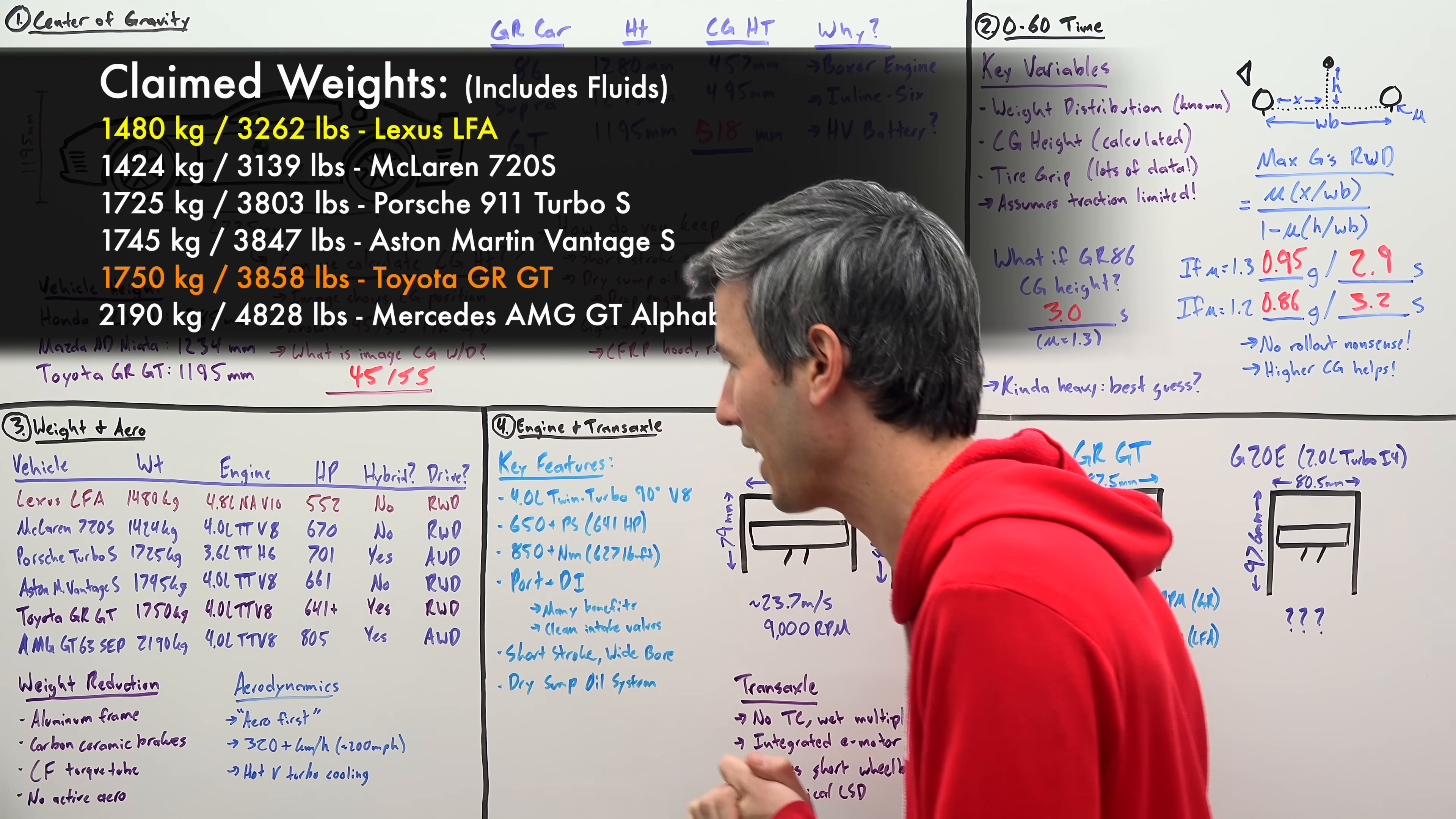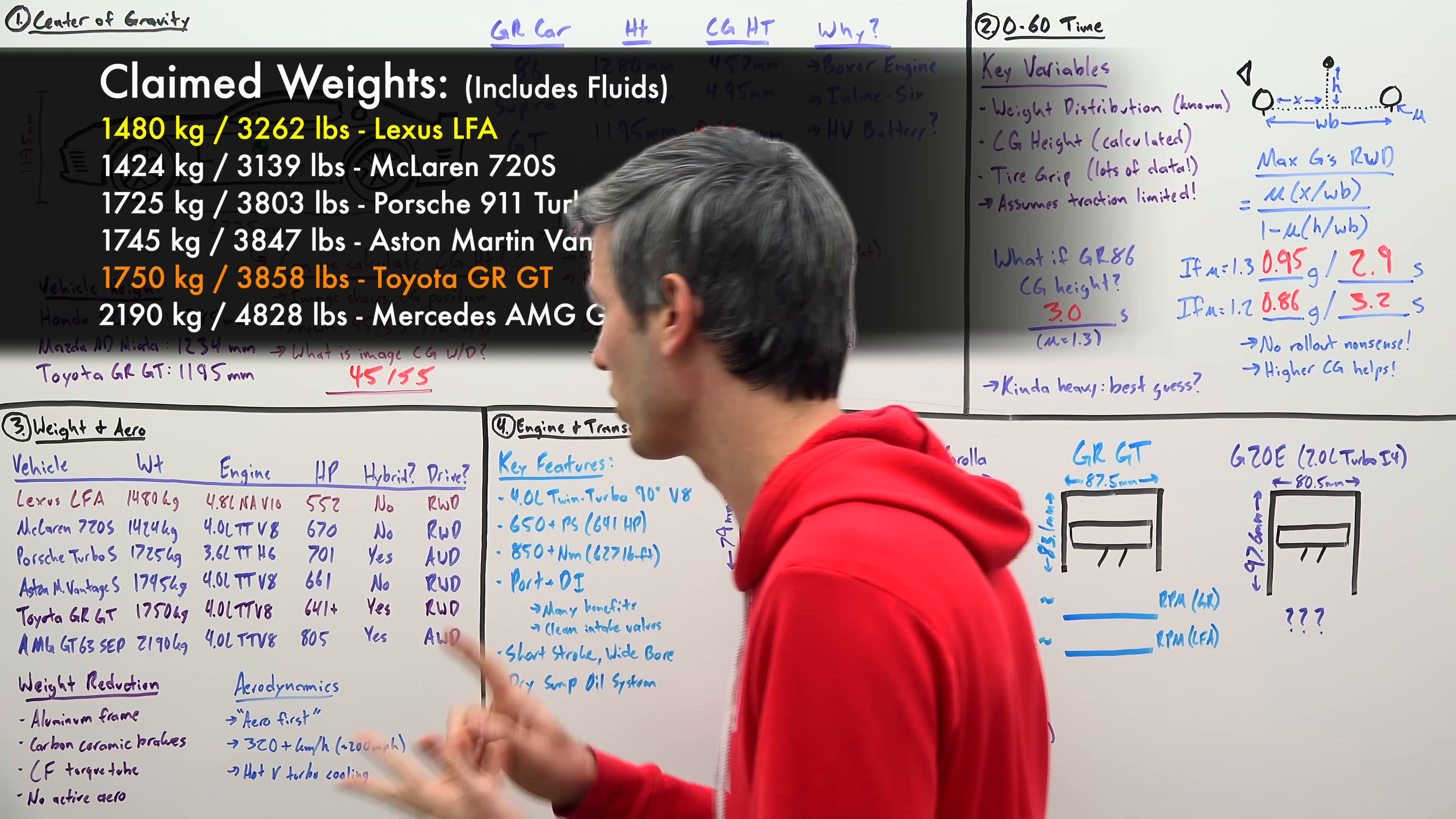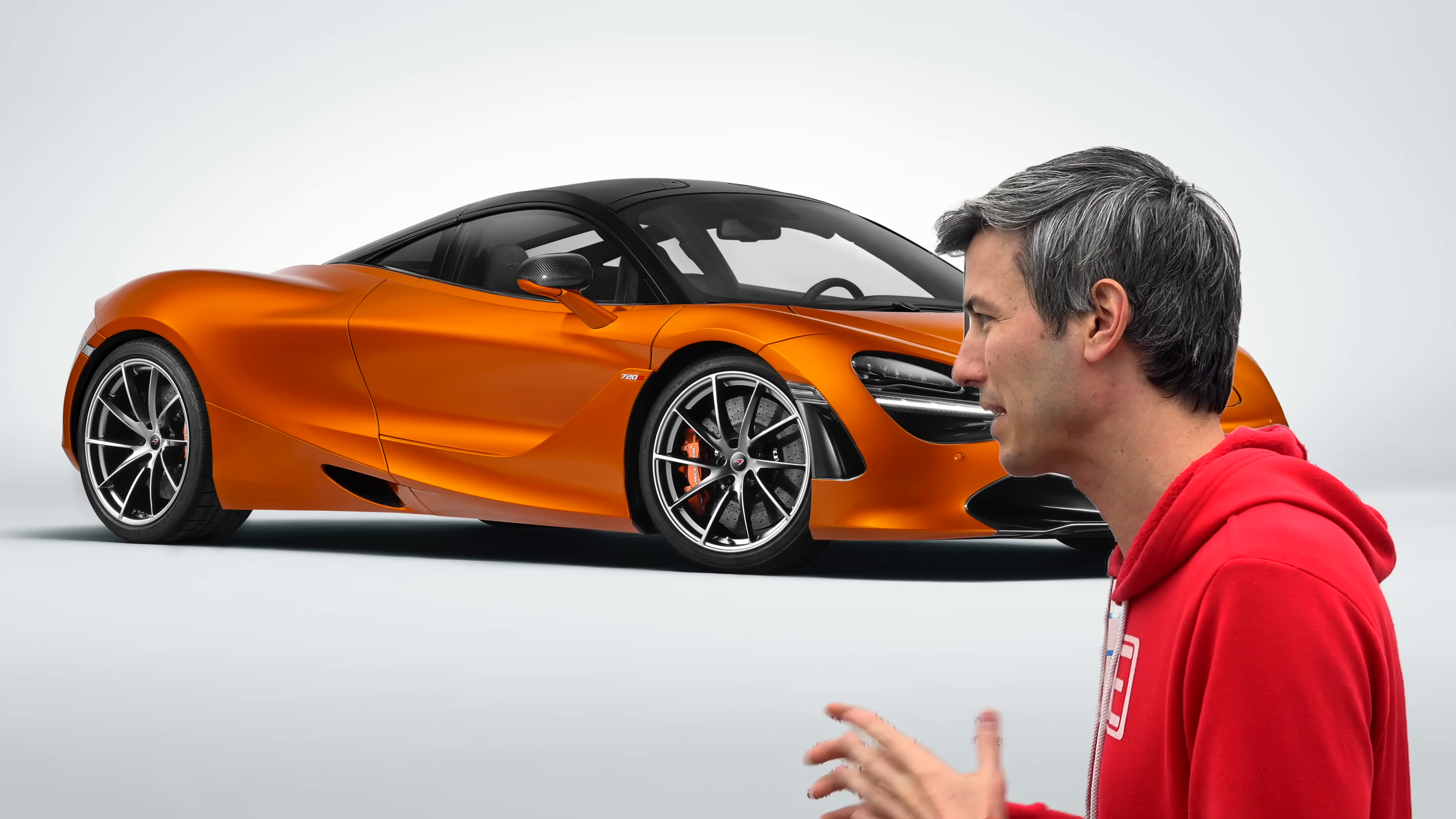If you look at the McLaren 720S, significantly lighter vehicle, though, you know, same size engine, twin turbo V8, 4 liter, doesn't have a hybrid system, probably more expensive, so perhaps not the best comparison.